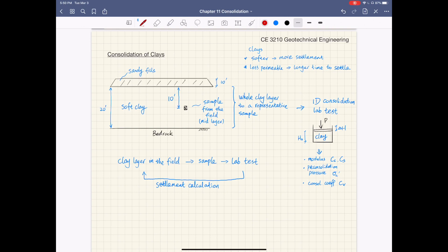To understand how we calculate consolidation of clays, let's take a look at this simple setup here. So you have the 20 feet of soft clay that is going to be loaded by say 10 feet of sand fill placed on top. To calculate, to estimate the settlement of this clay layer, we're going to actually take a sample from this clay layer at the middle of the layer to be representative.